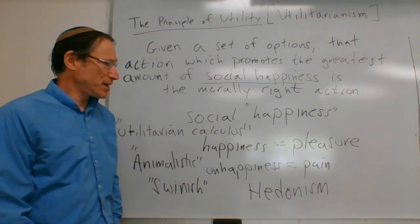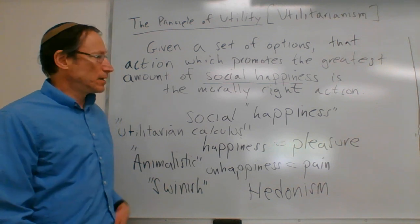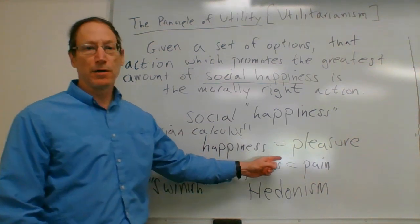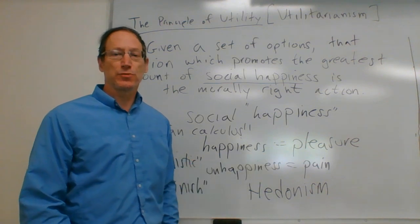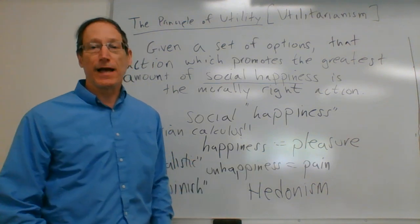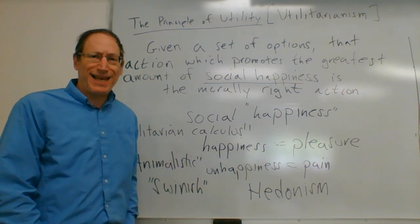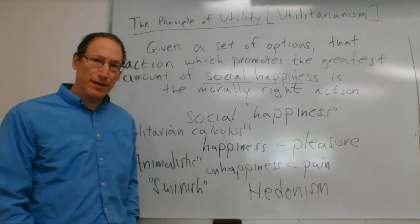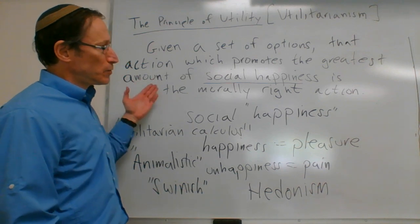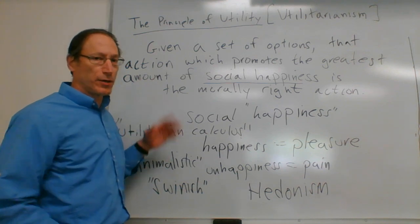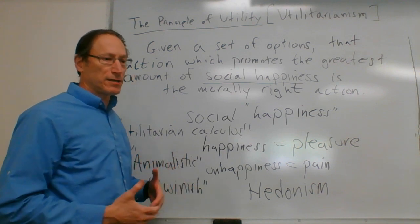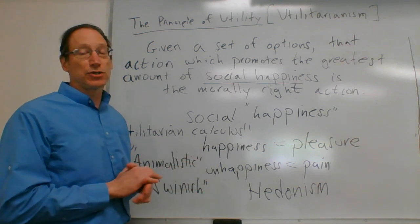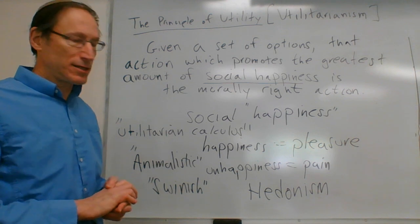According to Mill, happiness is pleasure — something readily identifiable — and the opposite, unhappiness, is pain. We know when we are experiencing pleasure and we know when we are experiencing pain. So according to Mill, one ought to be trying to promote as much pleasure in society as possible and trying not to promote pain.